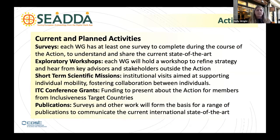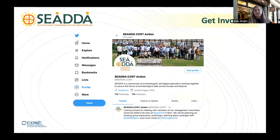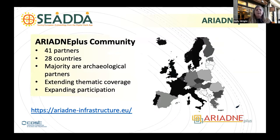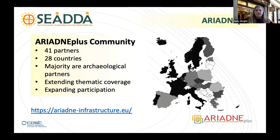Activities include surveys, workshops, scientific missions, publications, and because it's a COST action you can get involved at any time. If you're interested in getting involved, there's a Twitter account — Seattle underscore COST — and a website, Seattle dot EU. Finally, we're now in the second phase of Ariadne, now called Ariadne Plus, with 41 partners in 28 countries. This time they are primarily archaeological partners, so data providers. One of the key things for today is that Ariadne Plus is definitely extending its thematic coverage, of which heritage science and archaeological science is one.